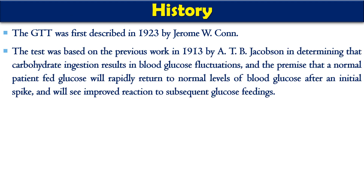Looking at the history of GTT, the test was first described by Jerome W. Conn in 1923. This test was based on the previous work by scientist A.T.B. Jacobson in 1913, for the determination that carbohydrate ingestion results in blood glucose fluctuations. The premise was that a normal patient given a glucose load will rapidly return to the normal level after a certain interval — first rising to a peak and then coming back to normal.